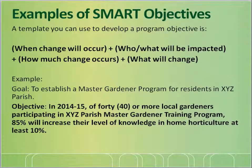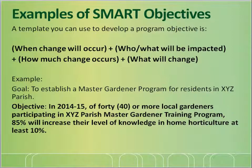A template you can use to develop a program objective is: when the change will occur, plus who or what will be impacted, plus how much change occurs, plus what will change. For example, if the goal is to establish a Master Gardener program for residents in XYZ Parish, your program objective would be: in 2014-15, of 40 or more local gardeners participating in the XYZ Parish Master Gardener training program, 85% will increase their level of knowledge in home horticulture by at least 10%. Take a moment to review the worksheet for developing program objectives that you printed out at the beginning of this training.